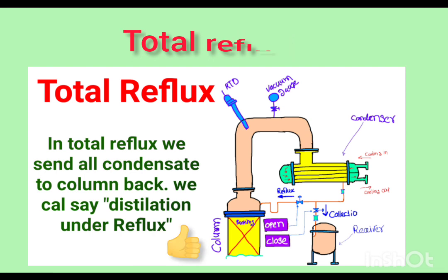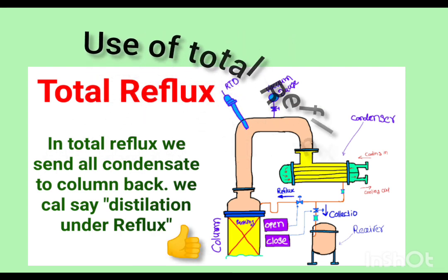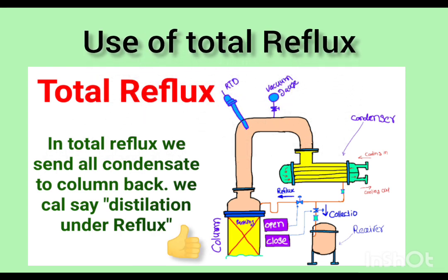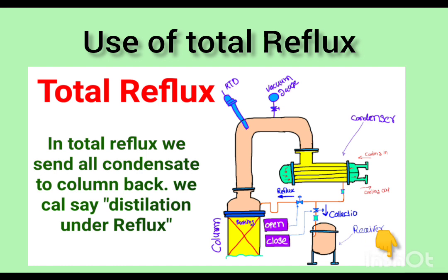Why do we use total reflux? Why are we not collecting the distillate? At the starting of distillation, we generally set the column under total reflux to establish the equilibrium condition. Once equilibrium is set, we start partial collection or total collection as per the process requirement.